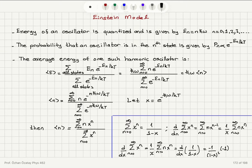In Einstein's model, we start taking into account quantization of energy, because the energy of an oscillator is quantized. For the quantum harmonic oscillator, the energy is (n + 1/2)ℏω, but if we neglect the zero-point energy, then we have nℏω as the energy levels, where n goes from zero to infinity.